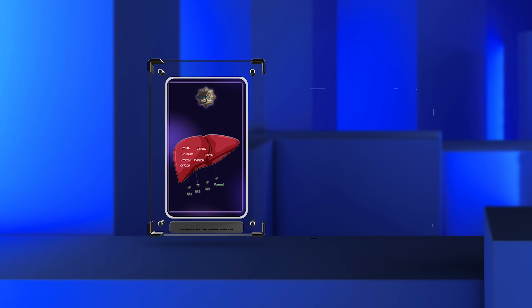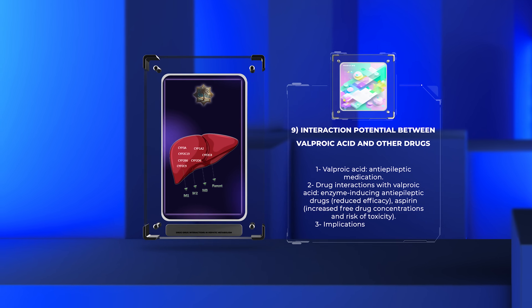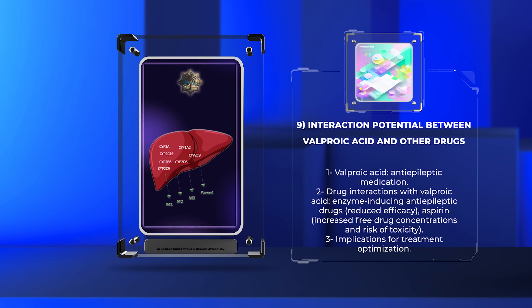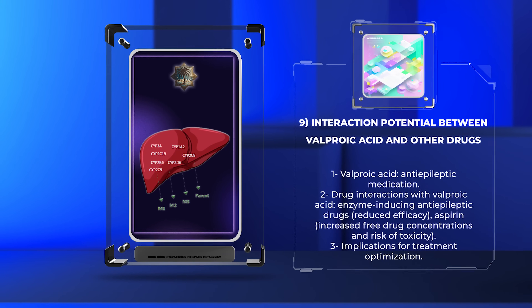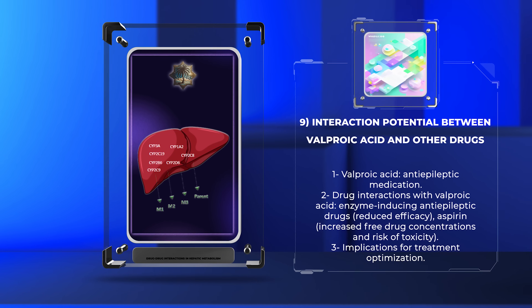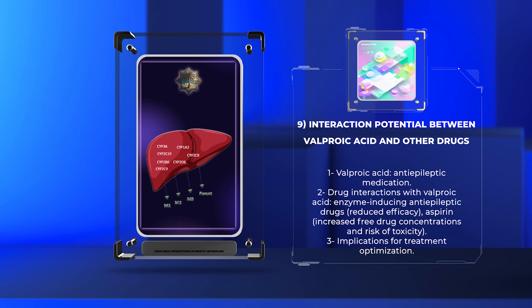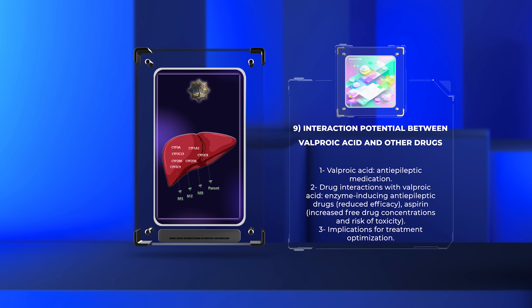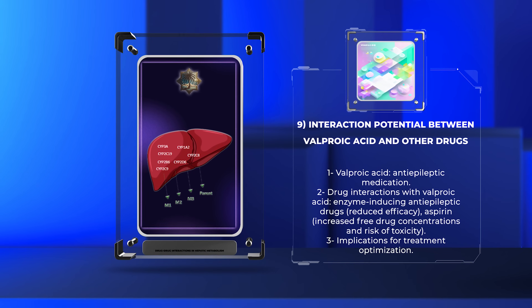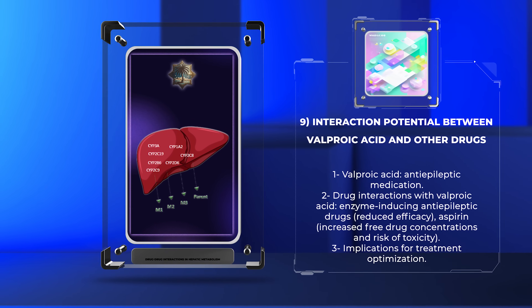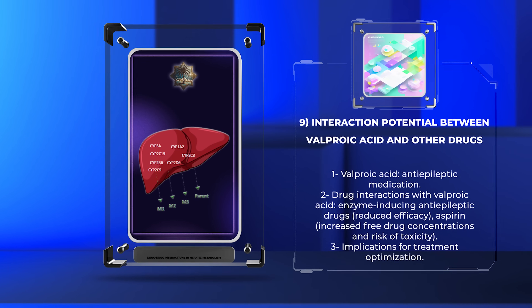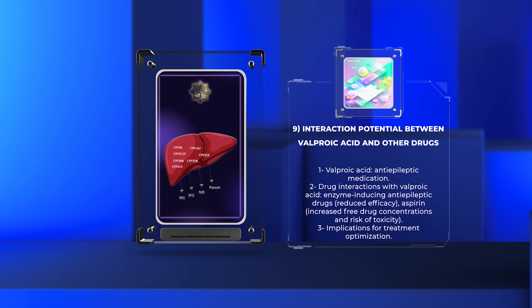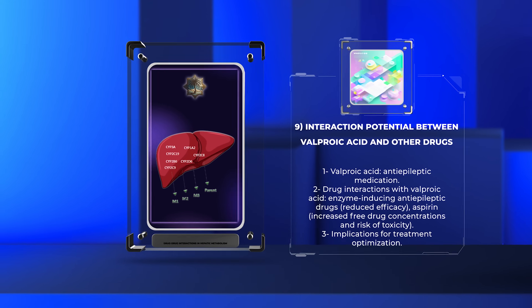Valproic acid, an antiepileptic medication, undergoes extensive metabolism, primarily through glucuronidation and mitochondrial beta-oxidation. Several drugs can interact with valproic acid, affecting its metabolism or therapeutic levels. For instance, enzyme-inducing antiepileptic drugs like carbamazepine can accelerate the metabolism of valproic acid, leading to decreased efficacy. On the other hand, drugs like aspirin can displace valproic acid from plasma protein-binding sites, potentially resulting in increased free drug concentrations and increased risk of toxicity. Recognizing these interactions is vital for optimizing treatment in patients using valproic acid.